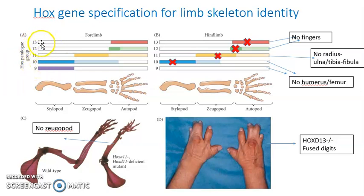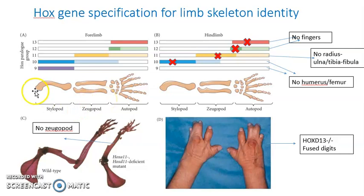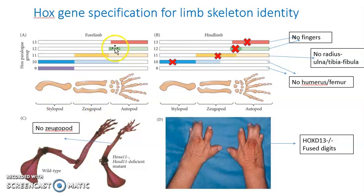There are 9-to-13 groups of Hox gene paralogs, and their expression at different regions determines limb skeletal identity. Hox 9 and 10 genes are expressed in the stylopod region, Hox 11 is expressed in the zeugopod region, and Hox 12 and 13 are expressed in the autopod region.